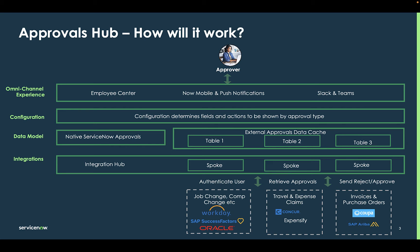The second layer is the data model. There's an out-of-the-box flow that fetches data from third-party systems like Concur or Workday and inserts them into ServiceNow data tables. The third layer is the configuration layer, where admins can configure different sections on the to-dos or on the approvals page to display request-specific information coming from that third-party system.